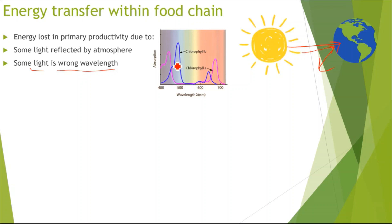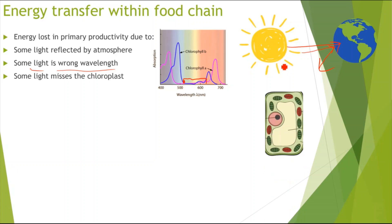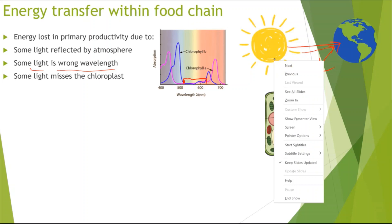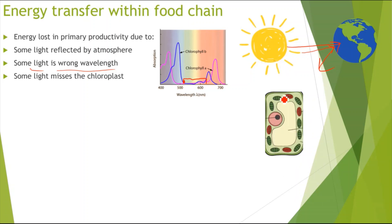Some light is the wrong wavelength: when light hits the chloroplast it is absorbed by chlorophyll, but not all wavelengths are absorbed equally. For example, wavelengths from around 500 to 600 nm are barely absorbed at all — that is simply the wrong wavelength. Additionally, some photons of light miss the chloroplast entirely, passing through the cell without triggering the light-independent reaction.